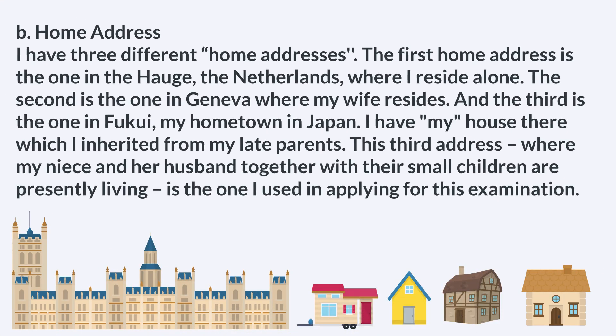B. Home address. I have three different home addresses. The first is in The Hague, the Netherlands, where I reside alone. The second is in Geneva where my wife resides. And the third is in Fukui, my hometown in Japan, where I have a house that I inherited from my late parents. This third address, where my niece and her husband together with their small children are presently living, is the one I used in applying for this examination.